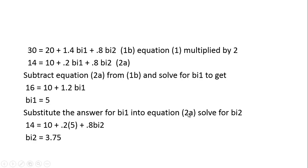I substitute BI1 back into one of the equations — I'll take equation 2A. Now I have 14 equals 10 plus 0.2 times 5 plus 0.8 BI2. That gives 14 equals 10 plus 1 plus 0.8 BI2, so rearranging: 14 minus 10 minus 1 divided by 0.8, which gives 3 divided by 0.8 — so BI2 is equal to 3.75.